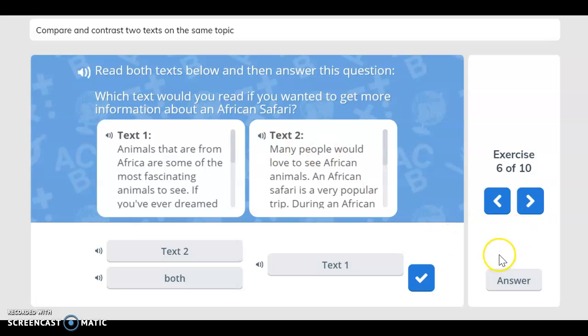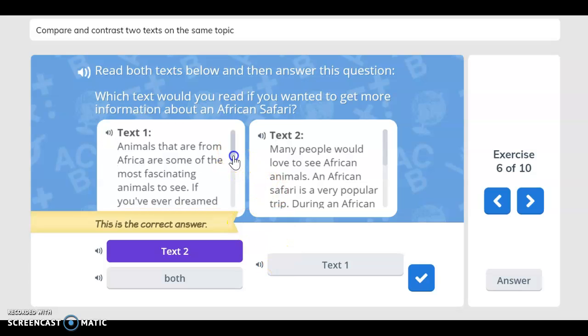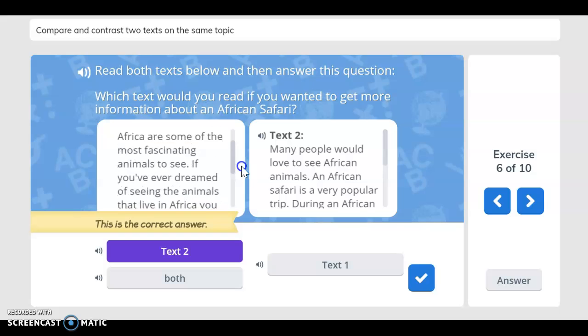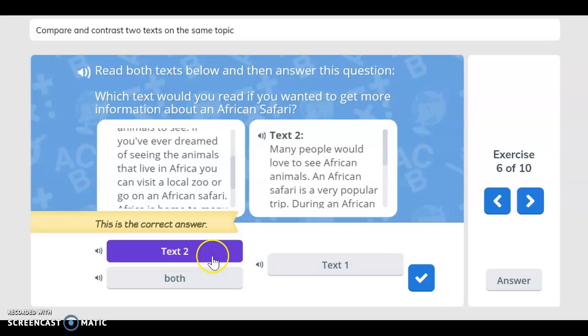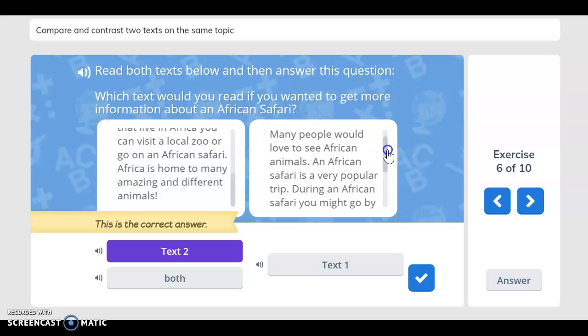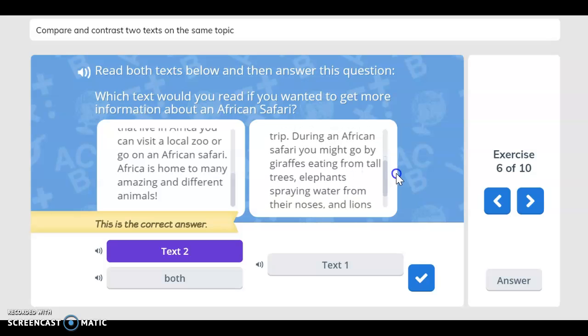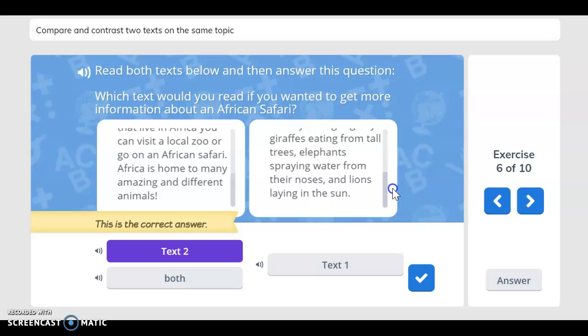Read the text below and then answer this question. Which text would you read if you wanted to get more information about an African safari? Animals that are from Africa are some of the most fascinating animals to see. If you've ever dreamed of seeing the animals that live in Africa, you can visit a local zoo or go on an African safari. Africa is home to many amazing animals. If you said text 2, you are correct.